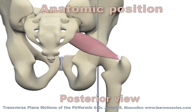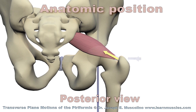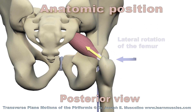Here we have a posterior view. The axis of rotation is the dashed vertical line, and the line of pull of the piriformis is displayed by the yellow arrow. The piriformis contracts and creates lateral rotation of the femur.